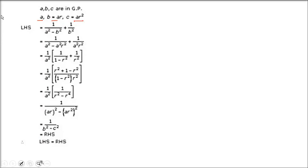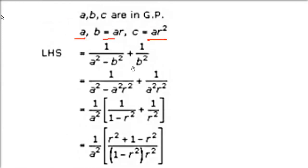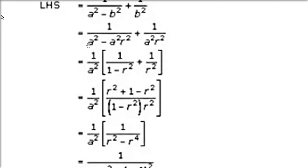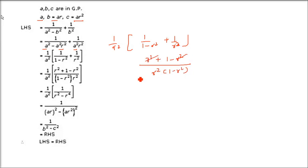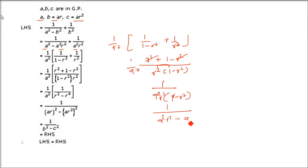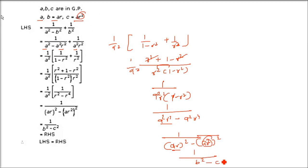Part 4: 1/(A² − B²) + 1/B² = 1/(B² − C²). Substituting A, AR, AR². Take 1/A² common. After taking LCM the numerator becomes R² + 1 − R² = 1 over R²(1 − R²). That simplifies to 1/(A²R²(1−R²)) = 1/(B² − C²), confirming left equals right.